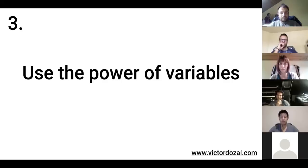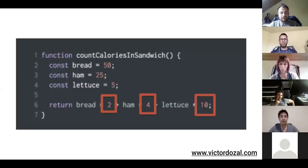So point number three, use the power of variables. We had a lot of variables on the last slide, but you're going to be a little bit amazed with this next exercise. I have a few numbers down there. Bread times two plus ham times four plus lettuce times ten. Does anyone have a clue what those crazy, magical numbers are?